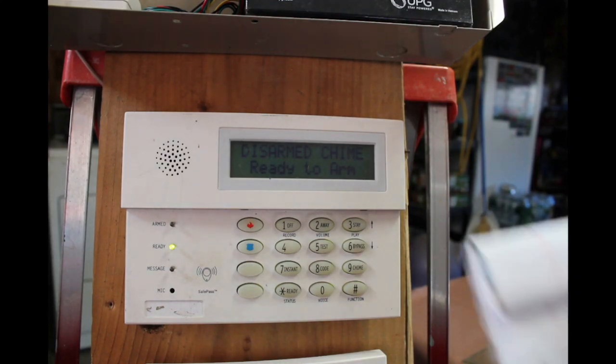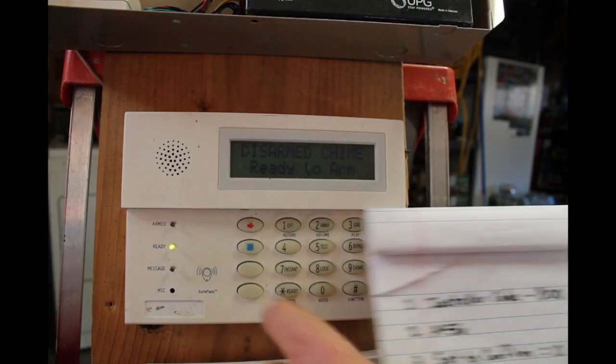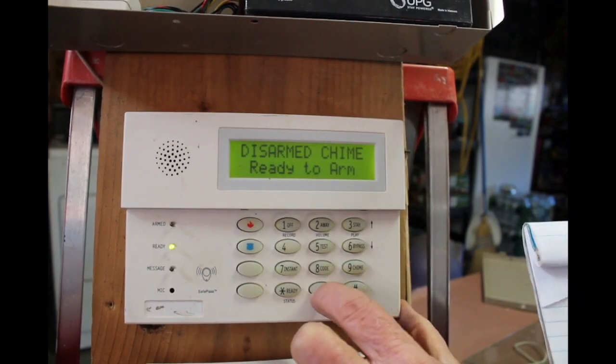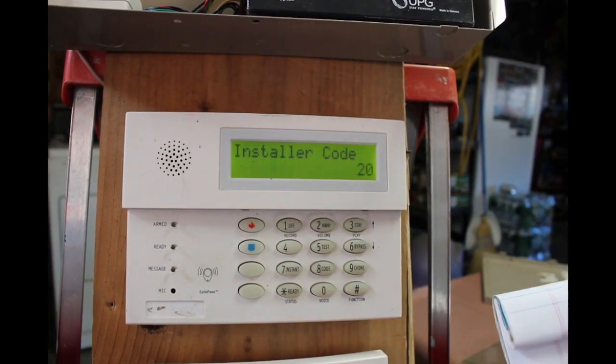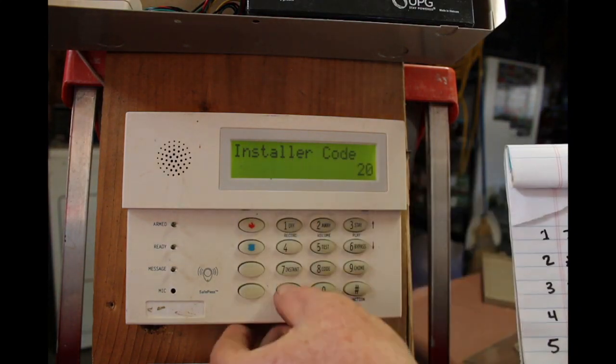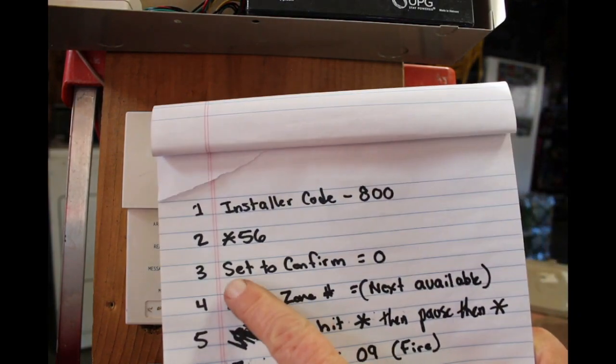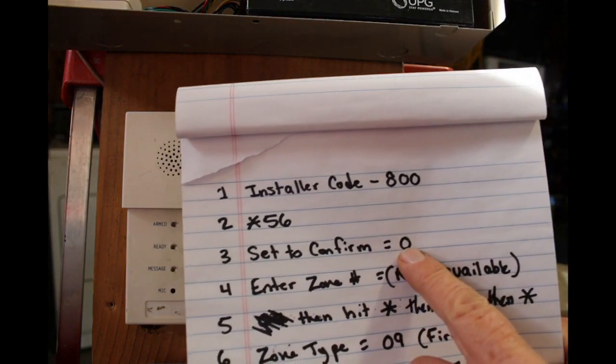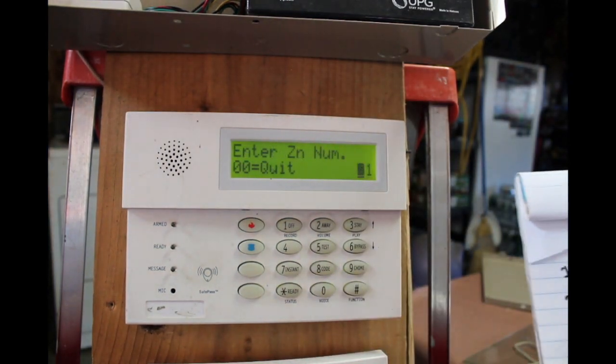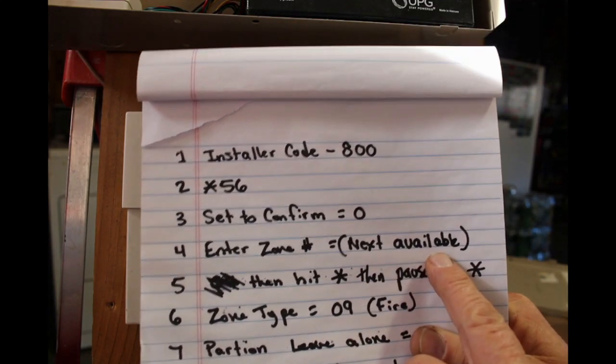So now let's get into it. We're going to be programming in an Ademco 5808 wireless smoke detector. All right, so the first thing we do: installer code 800. So 4-1-1-2-8-0-0. Okay, now I'm in program. The next thing you do is star 56. All right, it says set to confirm equals zero, so set to confirm, you hit zero.